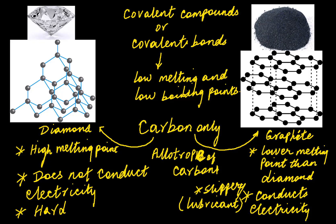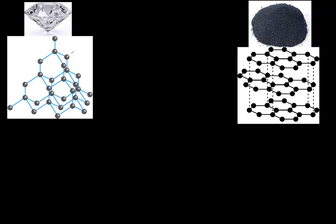Why should the properties be different when both are made up of the same element? The arrangement of the atoms is different because of the way in which they are bonded. Each circle in the diagram represents one carbon atom. Let's look at the chemistry of carbon atoms first before going further.